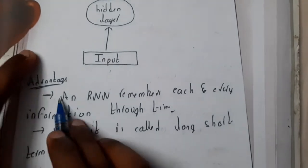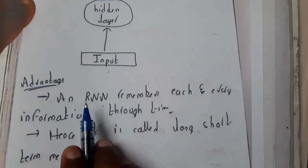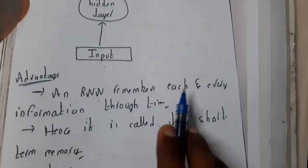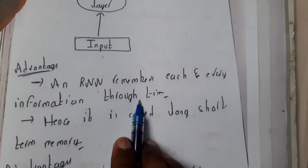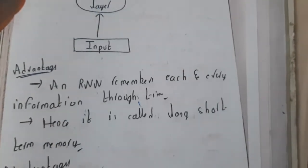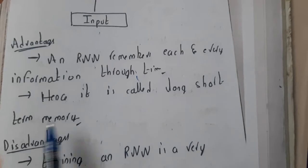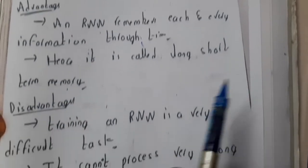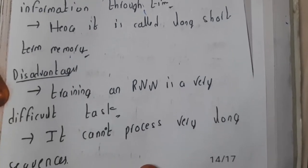What are the advantages? An RNN remembers each and every information through time. It is going to remember because it is having a hidden layer, hence it is called short-term memory. Here there will be a short-term memory in which it will be stored.